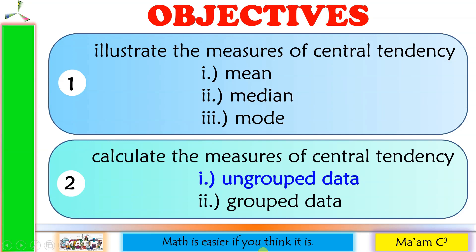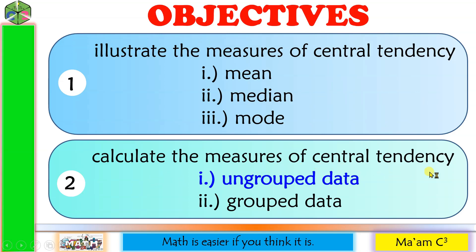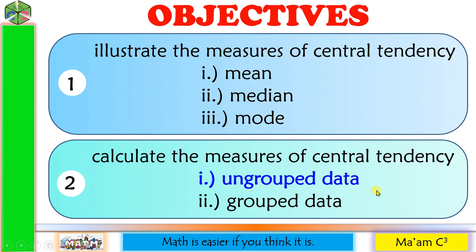Our objectives in this lesson are the following: illustrate the measures of central tendency — we have the mean, median, and the mode — and calculate the measures of central tendency for ungrouped and grouped data. In this video lesson, we will discuss measures of central tendency for ungrouped data. I will create another video lesson on measures of central tendency for grouped data.